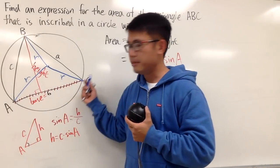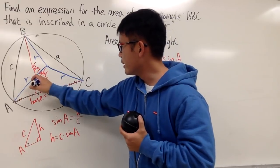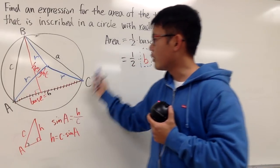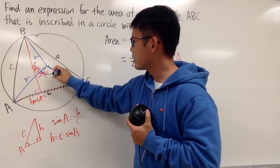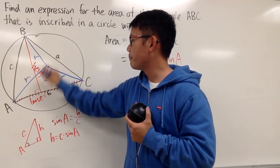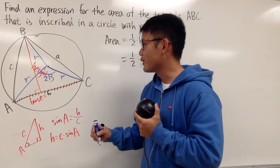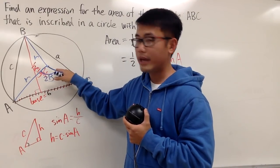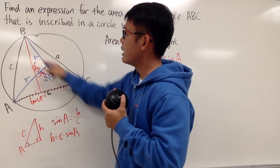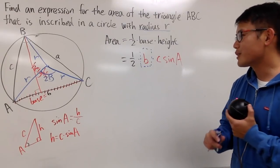If we draw radii from the center to both endpoints of side b, we get an isosceles triangle with both equal sides equal to R. The angle at the center is 2B by the Central Angle Theorem: if the inscribed angle is B, then the central angle subtending the same arc is 2B. I'll prove that in another video, but I'll use it here.